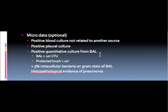Notice it says quantitative culture. A BAL with quantitative cultures of greater than 10 to the 4th is most significant. Also, if you have the ability to do a protected brush specimen, the threshold is 10 to the 3rd. Lastly, if you could look at 5% intracellular bacteria on gram stain of the BAL, or if you had lung tissue itself, that would give you evidence of pneumonia.